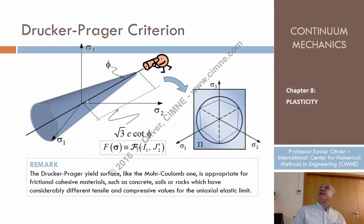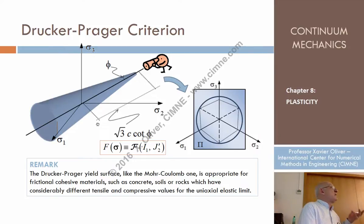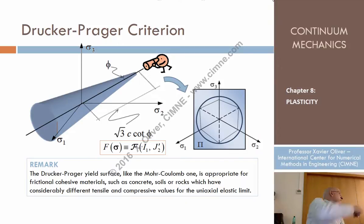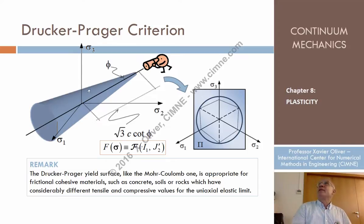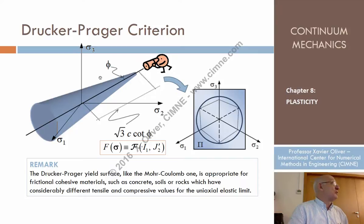For uniaxial cases in compression it is the same; in tension it is not exactly the same but relatively similar. Both criteria characterize materials that are much more resistant in compression than in tension. By the way, in geotechnics, compressions are taken as positive and tension as negative, so the cone appears in the opposite orientation — but the concept is the same.